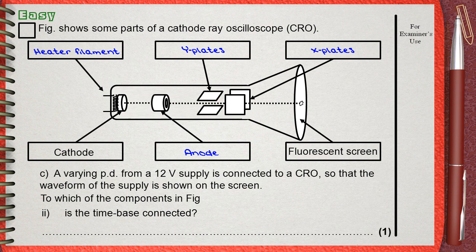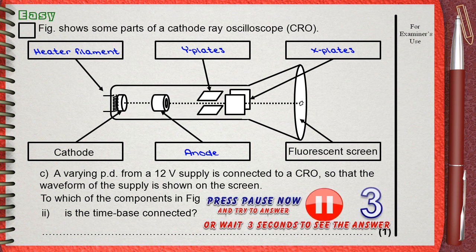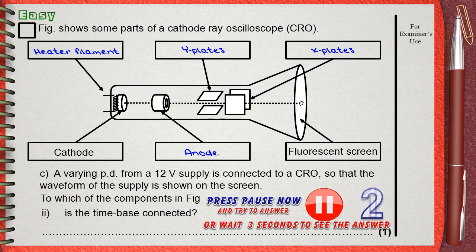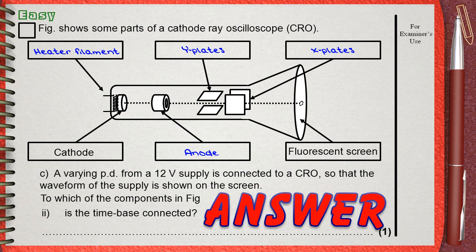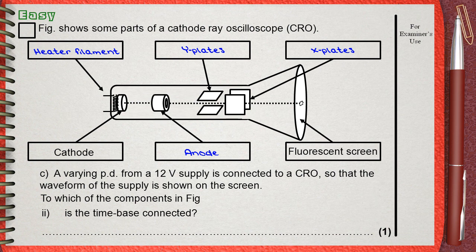Next, to which of the components in figure is the time base connected? The time base is responsible for deflecting the beam of electrons left and right, so the spot on the screen moves left and right across the screen.